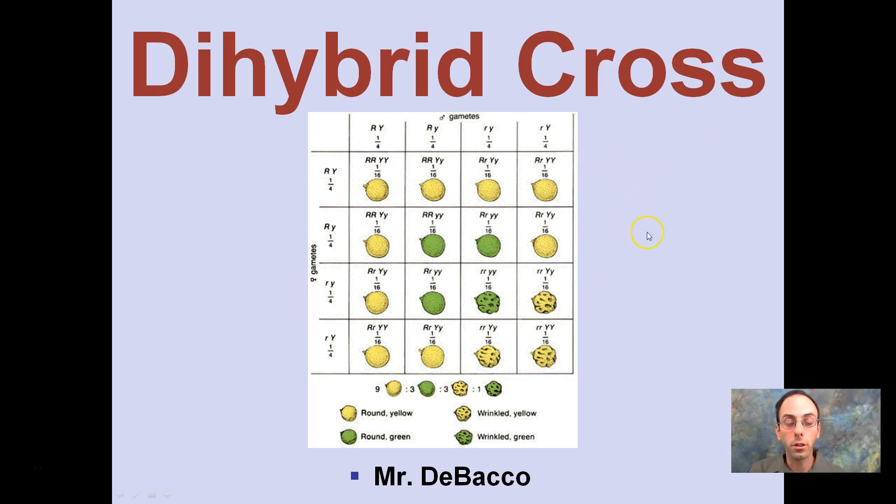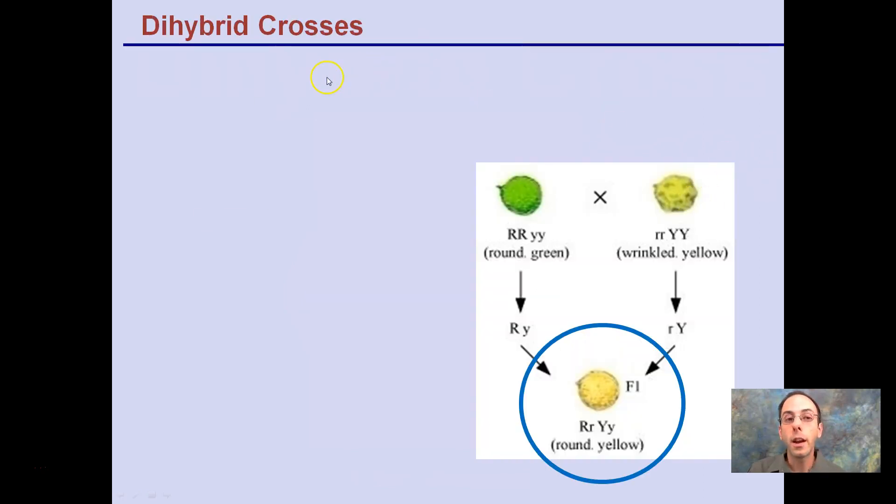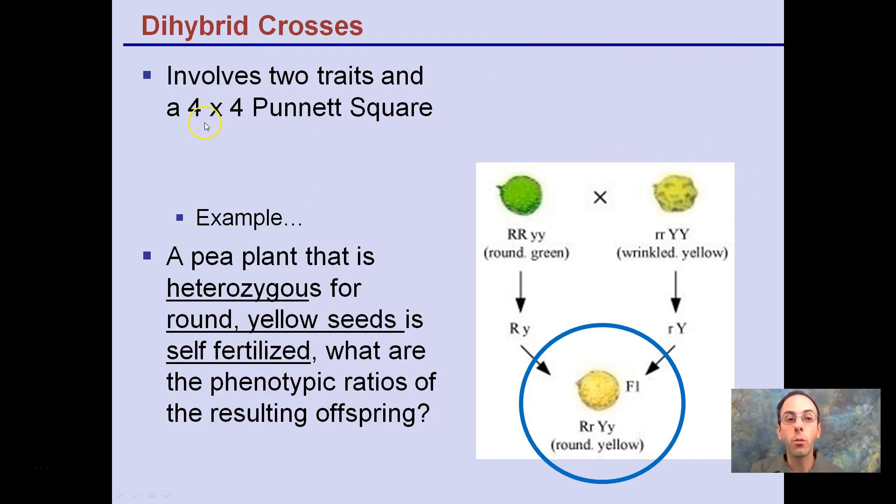We see our Punnett Square getting ever larger here. A dihybrid cross involves two traits and a 4x4 Punnett Square. The example is a pea plant that is heterozygous for round, yellow seeds is self-fertilized. What are the phenotypic ratios of the resulting offspring? So heterozygous round and yellow seeds, heterozygous for yellow also.